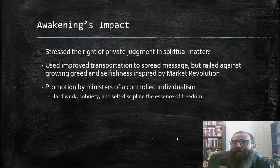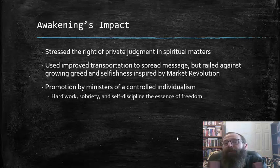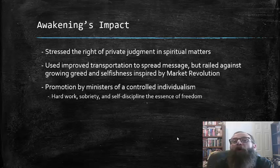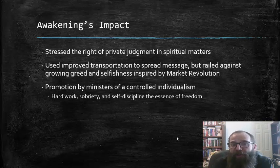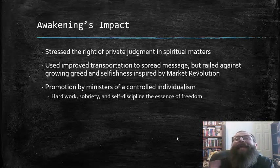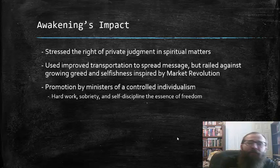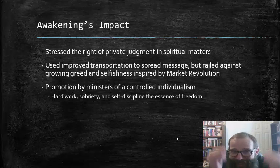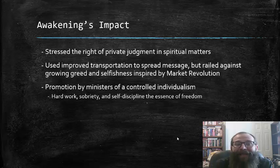The Second Great Awakening and the evangelical ministers associated with it were generally supportive of the transcendentalist emphasis on the individual. However, they were wary of it getting too far out of control — much like the elites during the late 18th century were wary of democracy going out of control, feeling it could lead to too much anarchy and not enough stability. So the Second Great Awakening ministers generally advocated for a controlled individualism, with an emphasis on hard work, sobriety, and self-discipline as the essence of freedom.